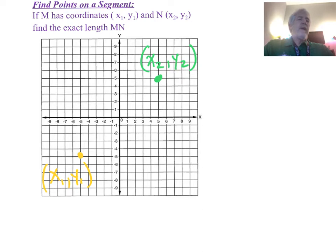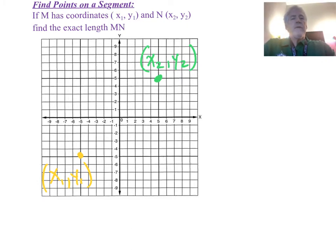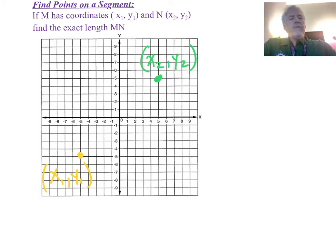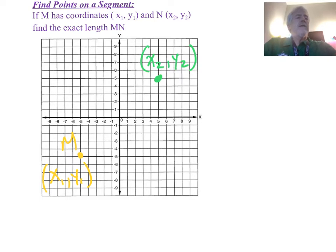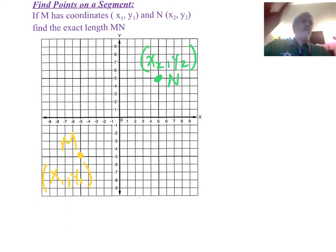Let's say I have two points. M is point x1, y1 — that's in yellow. And I also have a point N at x2, y2.